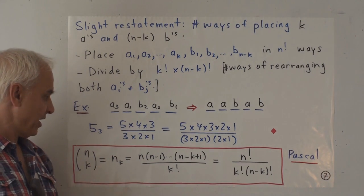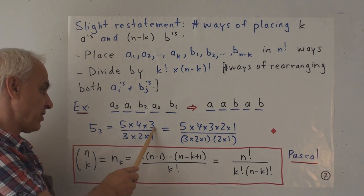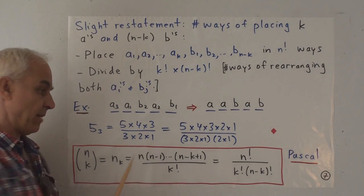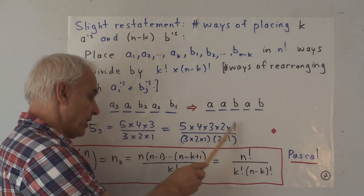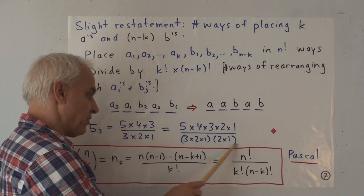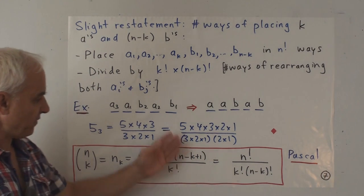So this is exactly the same number that we got before. It's just a different way of presenting it or thinking about it. So we can think of 5 choose 3 as either 5 times 4 times 3 divided by 3 times 2 times 1, or we can think of it as 5 factorial divided by 3 factorial times 2 factorial. And here are the general versions of those statements.